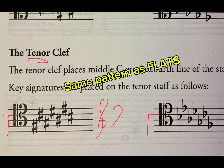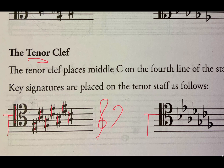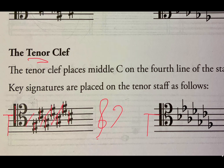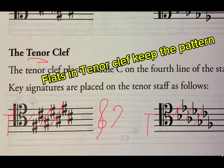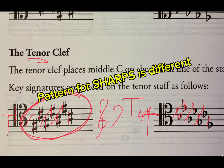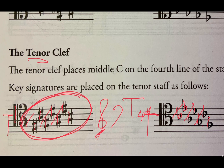Different than how you would write it in the treble clef and bass clef, the sharp pattern is two, two, two, one. Look at the flats — they're written in the same way: two, two, two, one. Battle ends and down goes Charles' father. So remember the tenor clef — this is your T on the fourth line, and it determines where middle C is. And the pattern of the sharps is different than how you would write it in the treble or bass clefs.